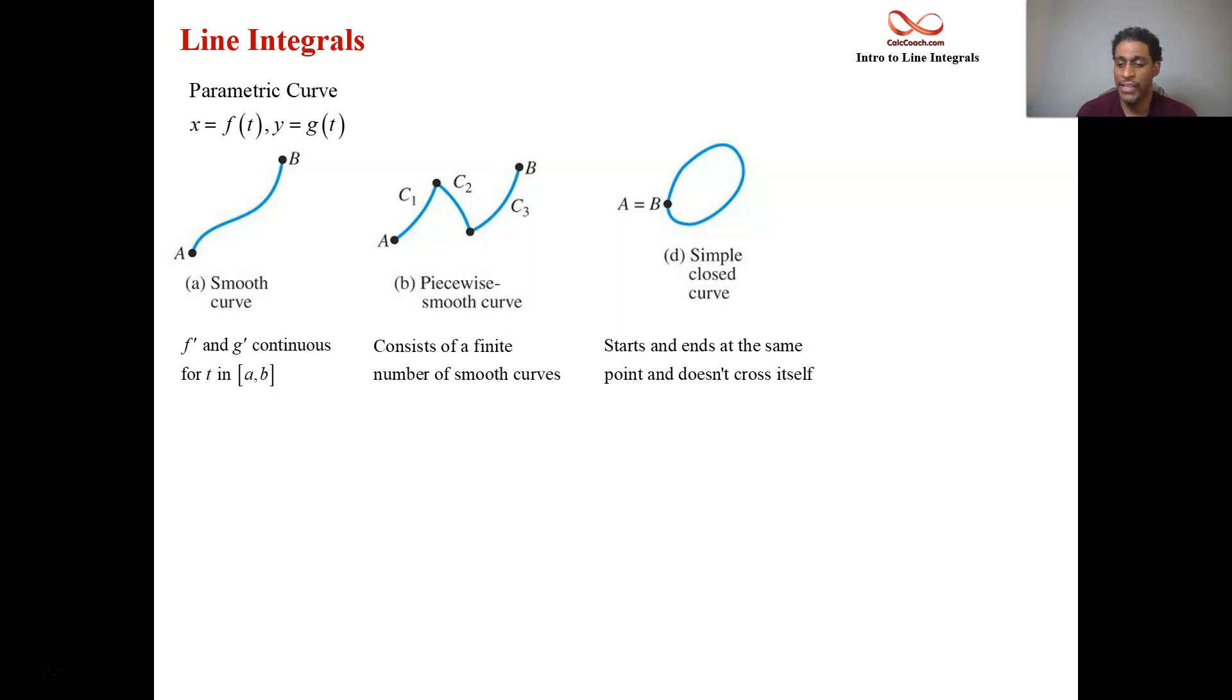And then here's an example of a figure eight curve, it crosses over itself. If we encounter these, we can deal with them, but we're going to have to break it up into two separate closed curves. And so we'll cross that bridge when we get to it. If we get to it at all, no worries. But for the most part, our curves are going to be smooth or piecewise smooth. And if they are closed, they're going to be simple and closed.